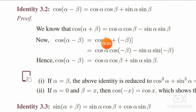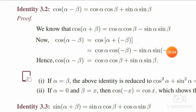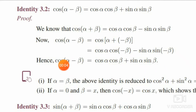Now we know that cos of minus theta is cos theta, and sin of minus theta is minus sin theta. So minus sin theta into minus sin theta — minus into minus becomes plus. Therefore we get plus sin beta. Hence we proved that cos of alpha minus beta is equal to cos alpha cos beta plus sin alpha sin beta. From this identity we have to note two subdivisions.